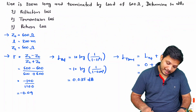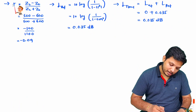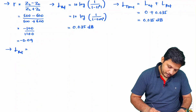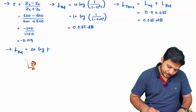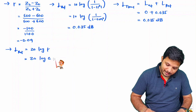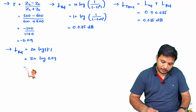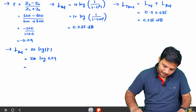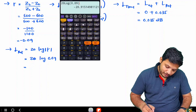For return loss, which is also based on the reflection coefficient: return loss = 20 log|ρ| = 20 log(0.09) = -20.91 dB.